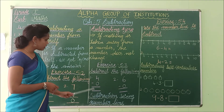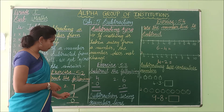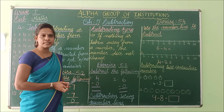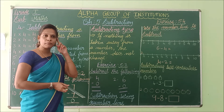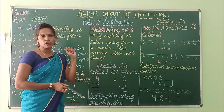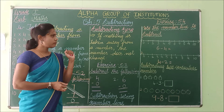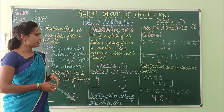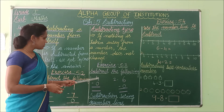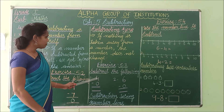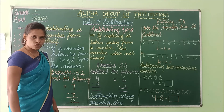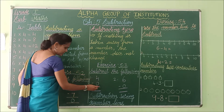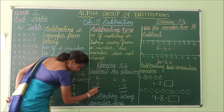See the first problem: 4 minus 0. We will not take anything away. So the number does not change here. 4 minus 0 is 4.